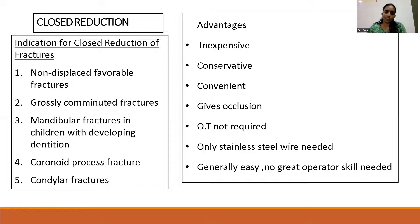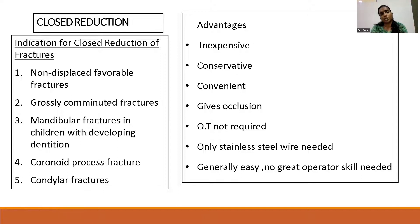The advantages of closed reduction are that it is inexpensive, it's a conservative and convenient treatment, and it gives good occlusion. An operation theatre is not required. Closed reduction or intermaxillary fixation can commonly be done with stainless steel wires and is generally easy. No special operator skill is required.